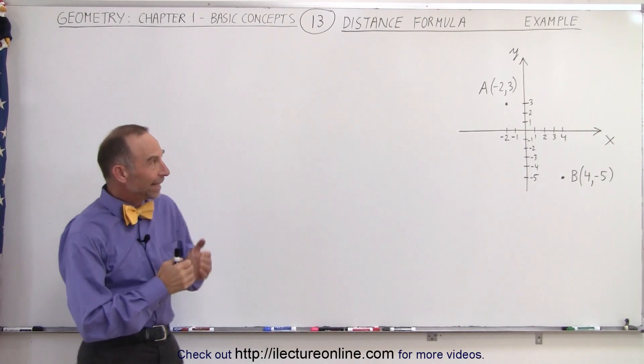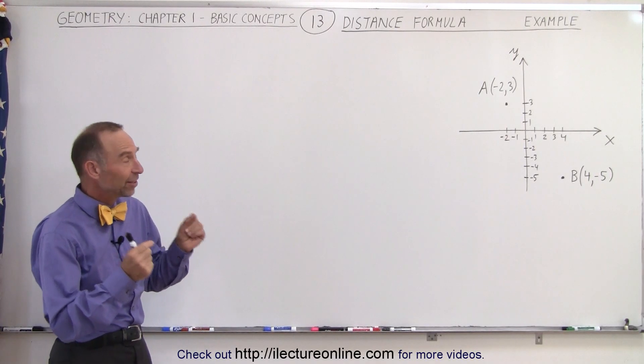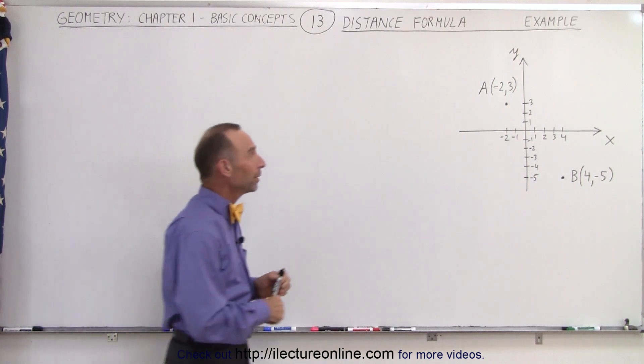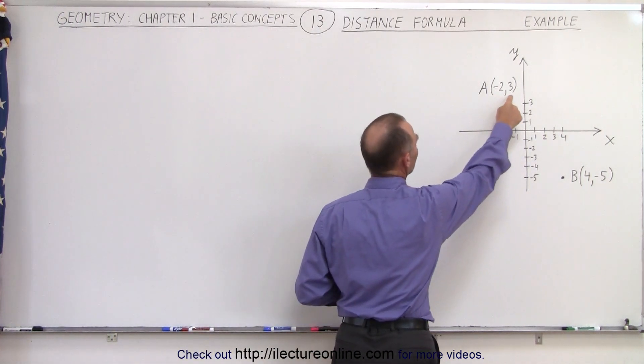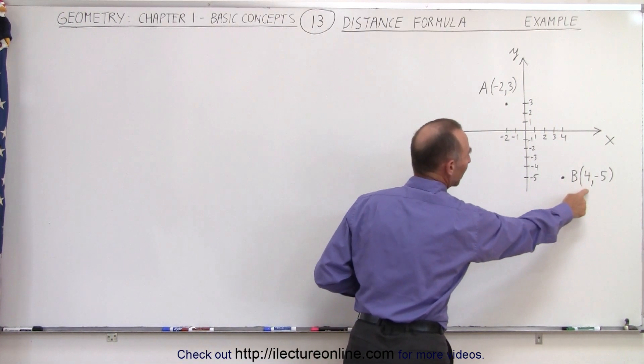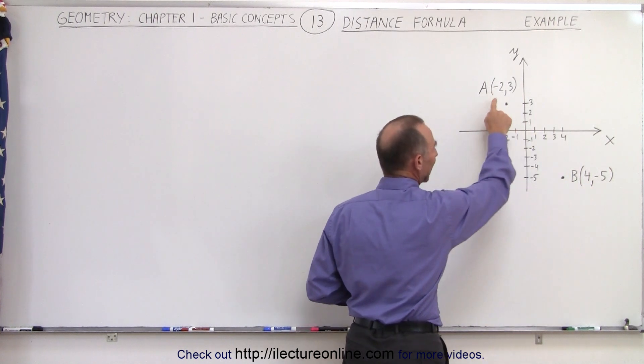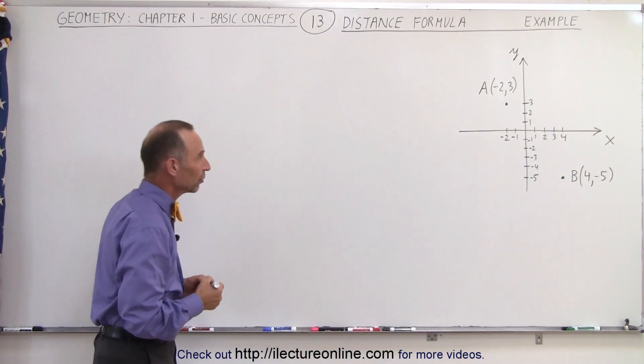Welcome to our lecture online. In this example we're trying to find the distance between two points, the point A indicated by negative 2, 3 and the point B indicated by 4, negative 5. Those are the x and y coordinates of those two points.